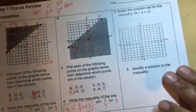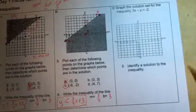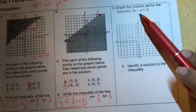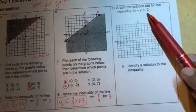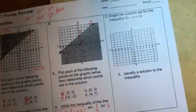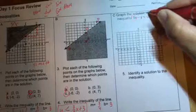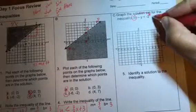Alright, so c is asking us to graph the solution set for the inequality, 3x minus y less than negative 2. You guys know this. Move the x, change the sign, divide by the number in front of the y. Don't forget to simplify. Okay, so we're going to move the x, change the sign.